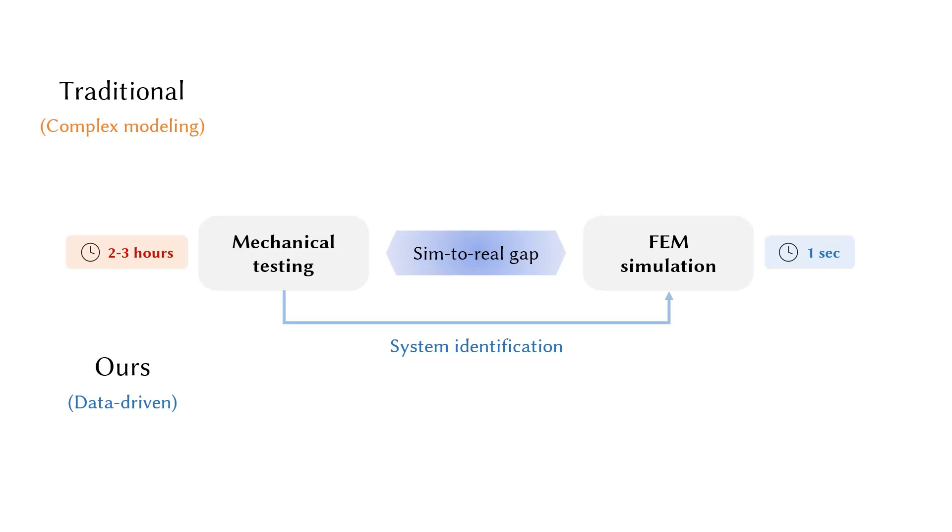Our method uses the result of mechanical testing to calibrate the simulator through system identification. Once the simulator is calibrated, it searches for potentially Pareto optimal microstructures and proposes them back for physical measurements. The information exchange proceeds iteratively, and in our case, it only takes 4 iterations for the sim-to-real gap to shrink by 10 times.